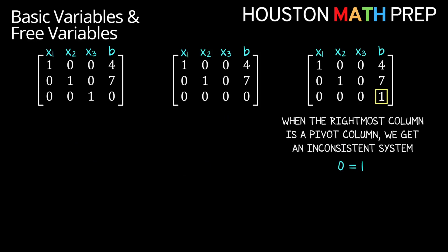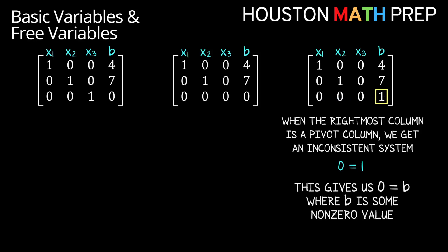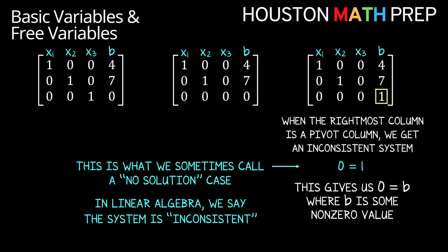Whenever the rightmost column in our augmented matrix is a pivot column, we get an inconsistent system, because that pivot will have nothing but zeros before it in the row, and so we'll have a statement telling us 0 is equal to some other number that's not 0. Definitely an inconsistent story — in other words, the system has no solution.